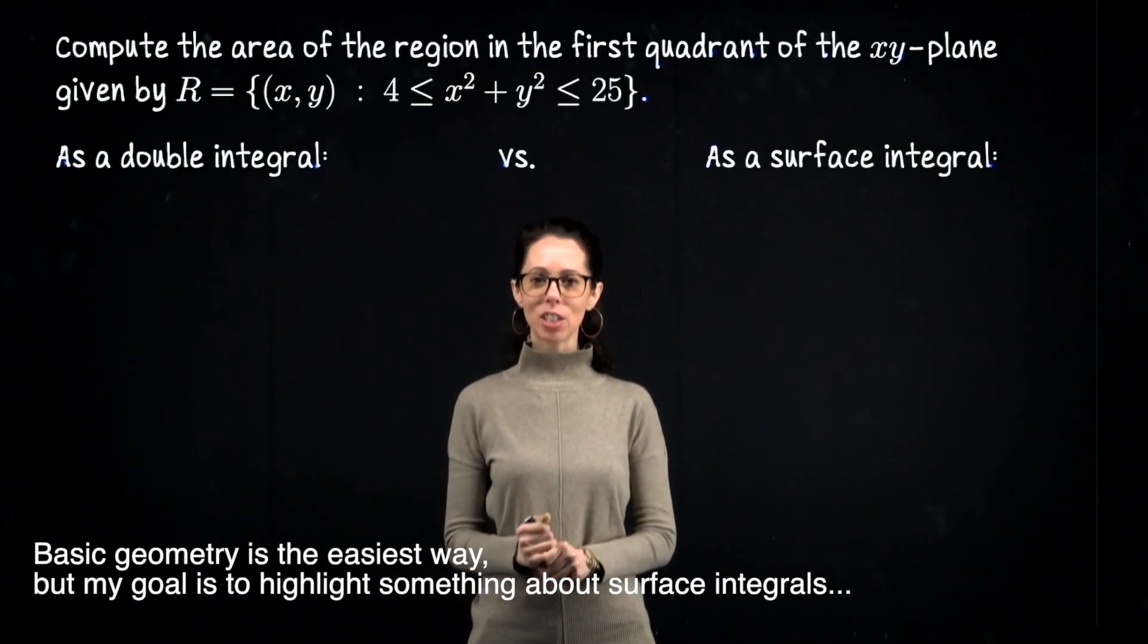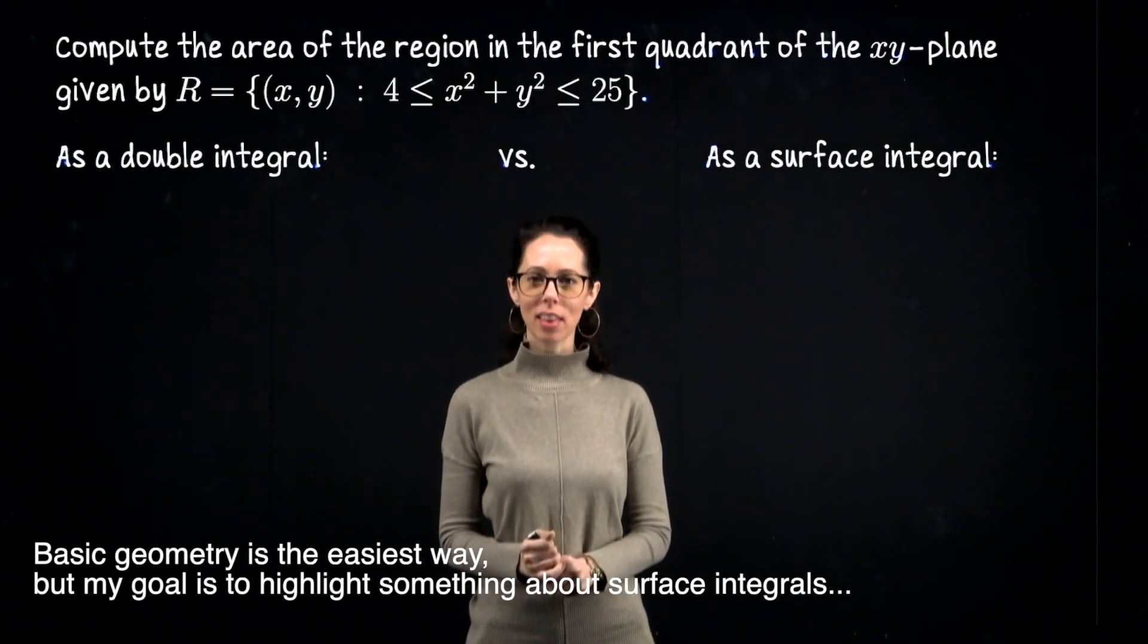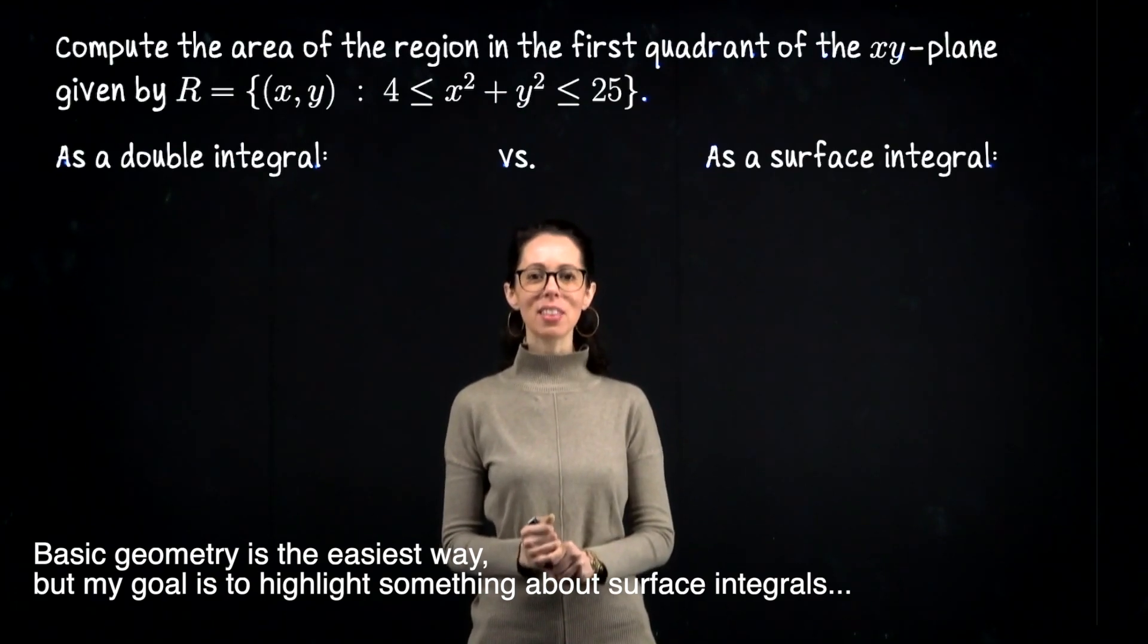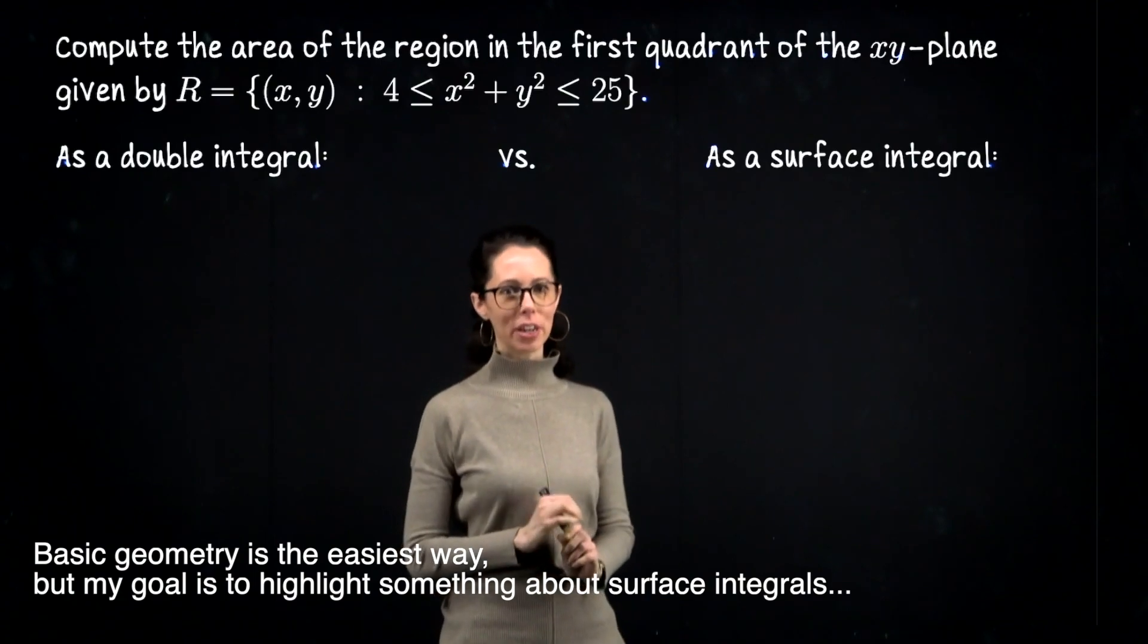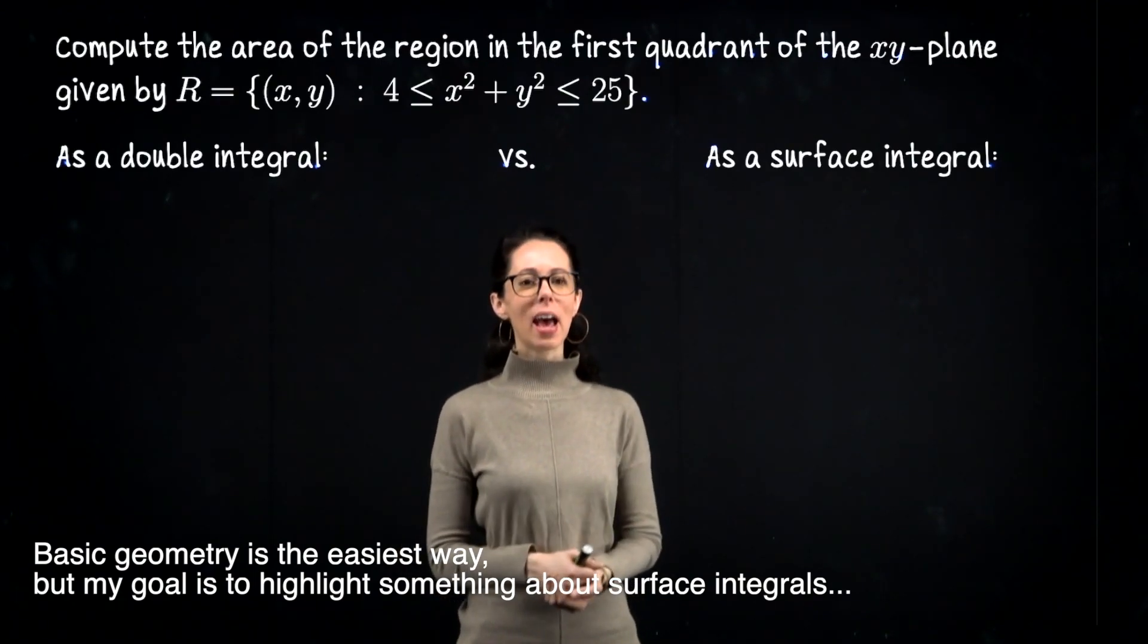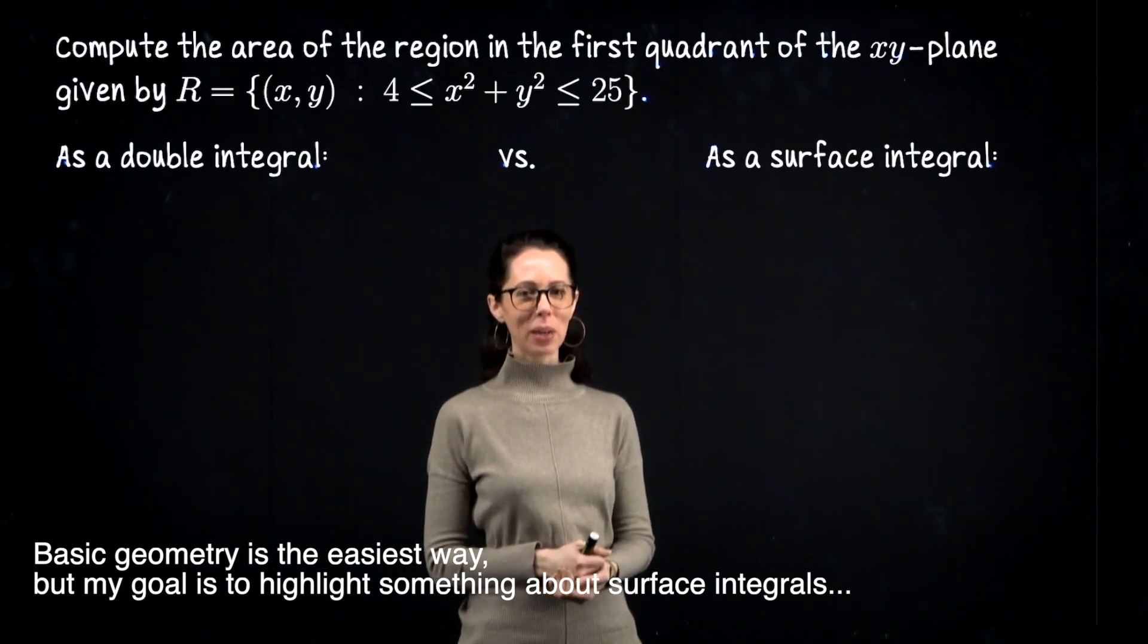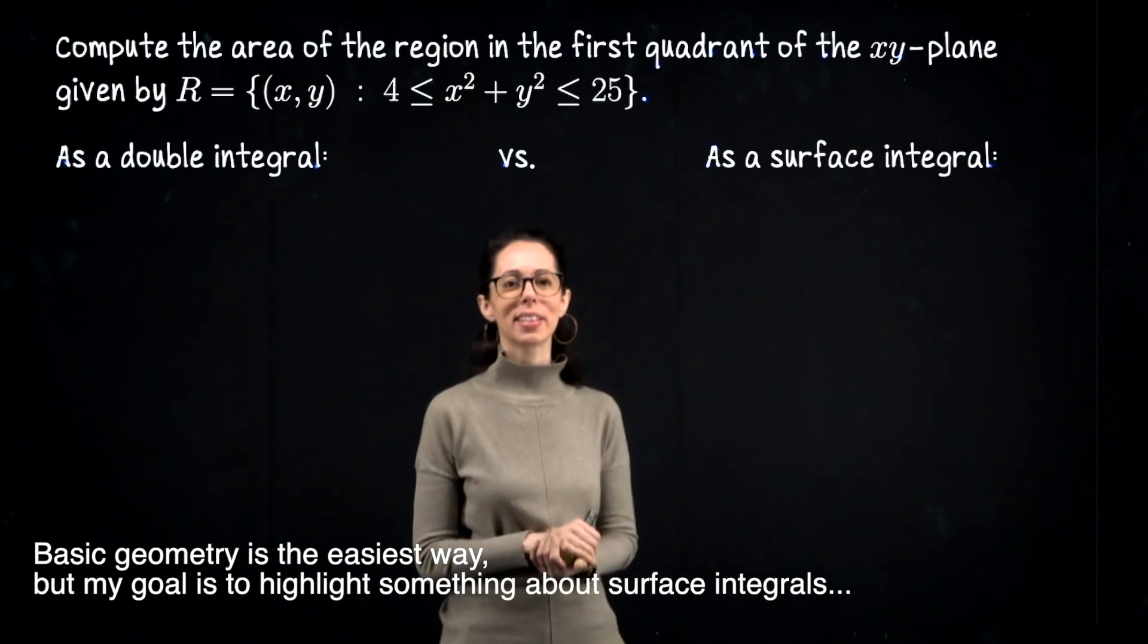Hi everyone, in this video I'd like to compute the area that lies between two concentric circles in the first quadrant two different ways. One, the classic double integral way, and the other as a surface integral, and I want to explain why I chose to do this two different ways at the end.